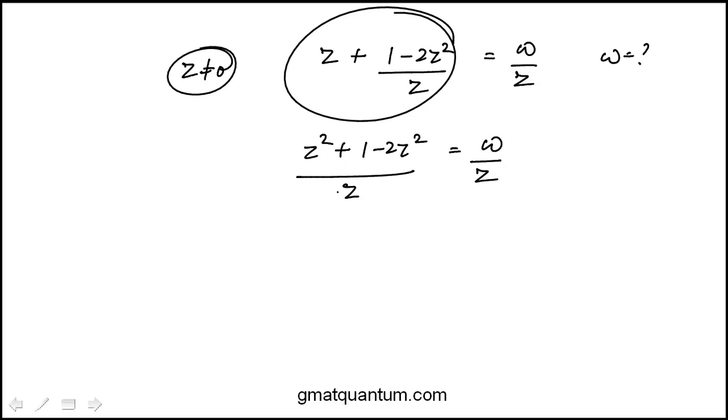And this numerator simplifies to 1 minus z squared, because we have minus 2 and then 1 over z. z is not equal to 0, so it knocks out. We're left with w is 1 minus z squared.